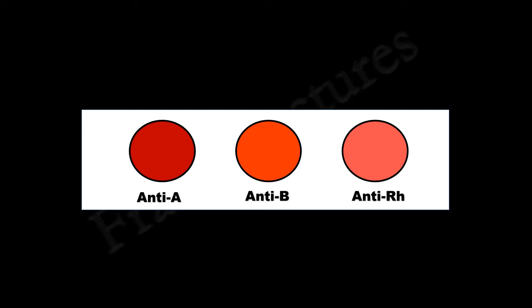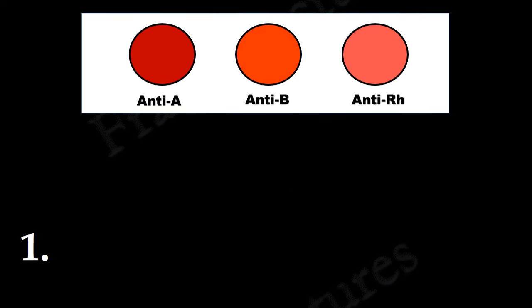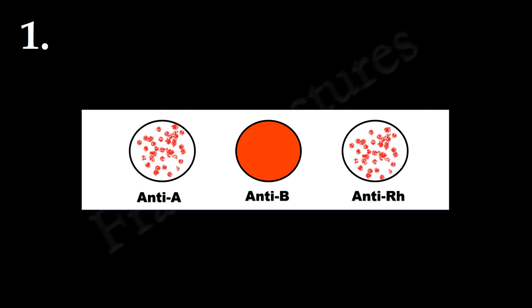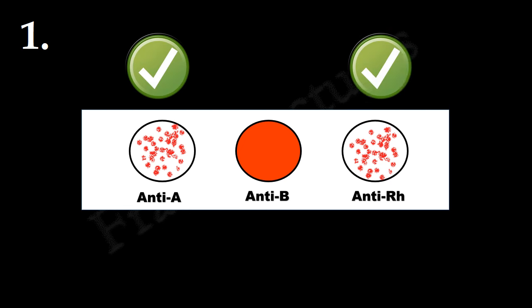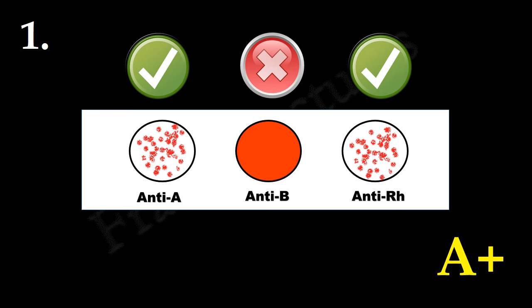Let's look at the possible observations and their interpretations. Here you can see agglutination in the anti-A circle and anti-RH circle. This means antigens present on red blood cells are A antigen and RH antigen. No agglutination in the anti-B circle; therefore, B antigen is absent. So blood group is A positive. Recall that the plus sign indicates the presence of RH antigen.